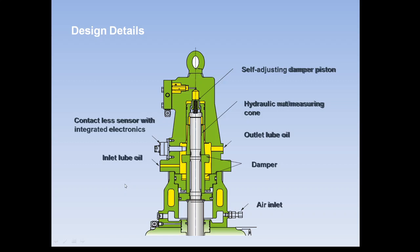As you can see, this is the top part. The first design feature is a contactless sensor with integrated electronics that provides feedback on whether the spindle is moving up and down or not. It's basically a feedback sensor which gives us information on whether the exhaust spindle is operating.